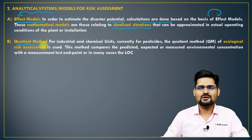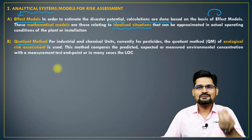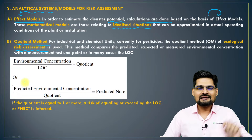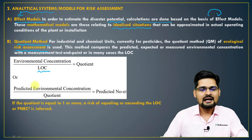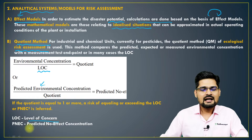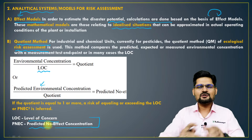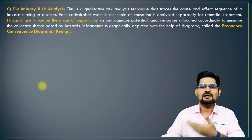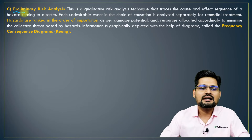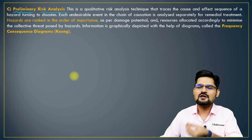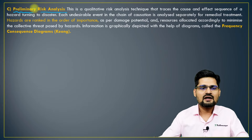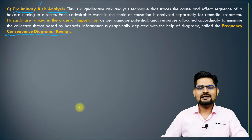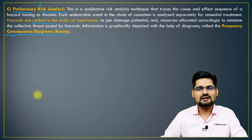Then there is the quotient method, which is again statistical in nature. It is applied in ecological risk assessment, using two key terms: LOC (level of concern) and PEC (predicted non-effect concentration). Then we have preliminary risk analysis — a very basic tool used when planning any development or project. Frequency-consequence diagrams and Keong diagrams are made here; causation and ranking of hazards are very important in this approach.